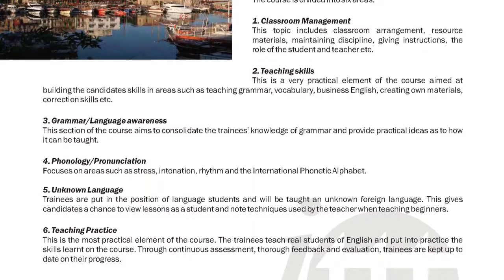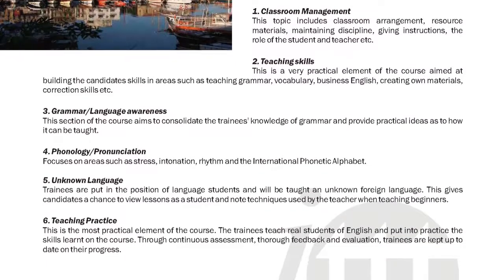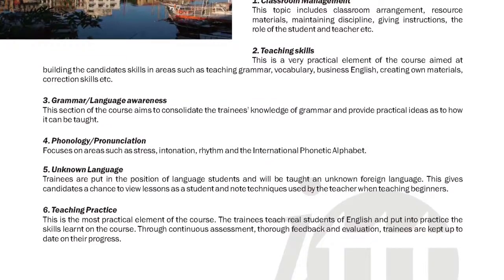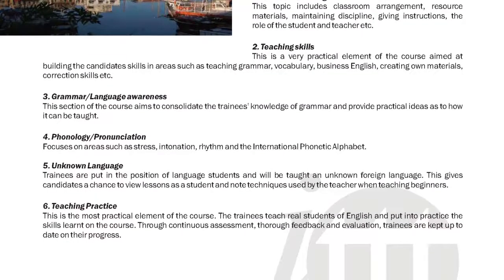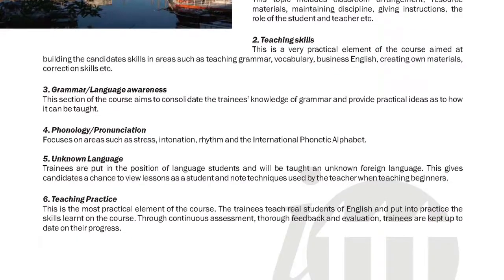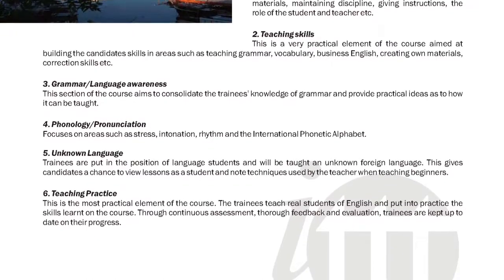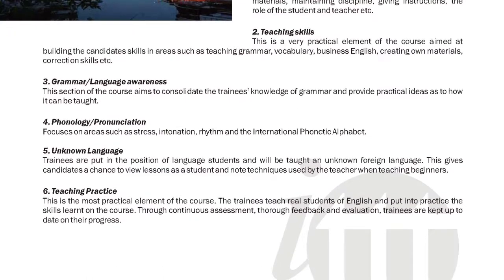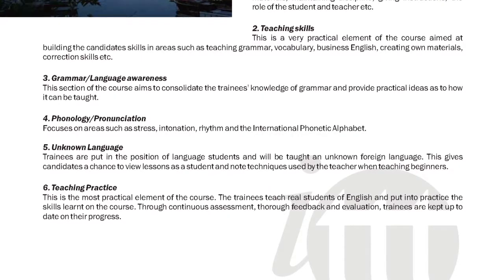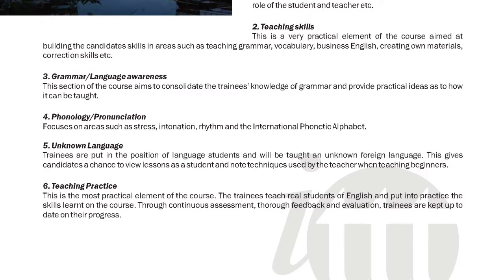Unknown language: trainees are put in the position of language students and will be taught in an unknown foreign language. This gives candidates a chance to view lessons as a student and note techniques used by the teacher when teaching beginners. Teaching practice: this is the most practical element of the course. The trainees teach real students of English and put into practice the skills learned on the course. Through continuous assessment, thorough feedback and evaluation, trainees are kept up to date on their progress.